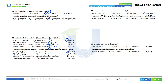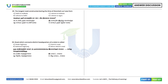47th question: An access from a road to private property is called a service road. Option D. 49th question: The longest road constructed during the time of Sher Shah Suri was from Agra to Kolkata. Option C.